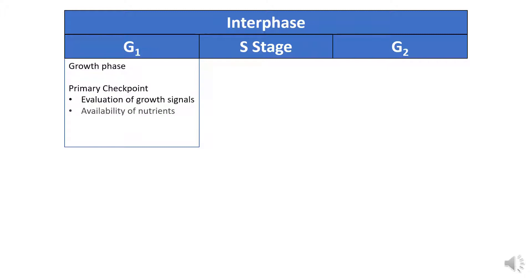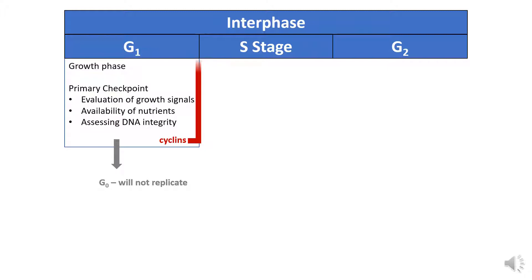What does that checkpoint mean? It means the cell is going to be evaluating certain growth signals, checking to make sure the environment has enough resources to support a new cell, and making sure the DNA is in good shape. If any of these things aren't working out, the cell will enter a phase called G0, and it will not replicate. However, if everything looks good and there are plenty of proteins called cyclins, the cell moves to the S stage.